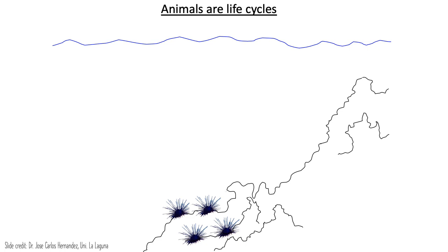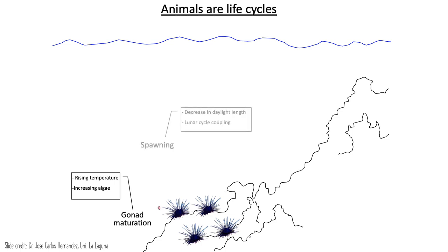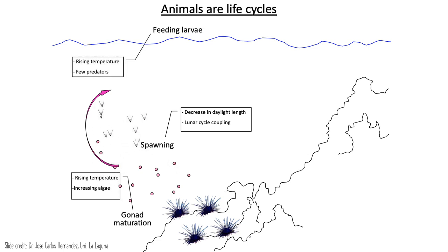I want to start this lecture by emphasizing that animals are life cycles. Many people are familiar with the adult forms of marine organisms such as these sea urchins depicted on the bottom of the slide, but they may not fully appreciate the complexity of their life cycle. Adults undergo a period of gonad maturation in response to rising seawater temperatures or increases in available algae, producing eggs and sperm, which they spawn into the water column where gametes fuse and fertilize, beginning to develop into a larval stage.